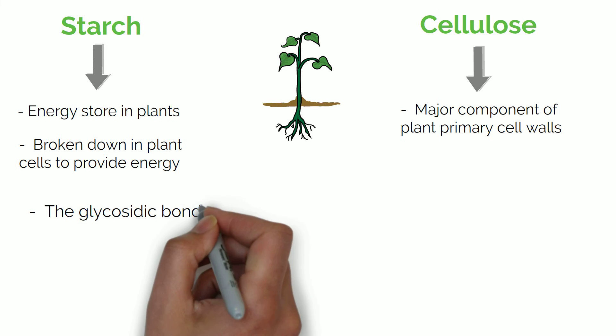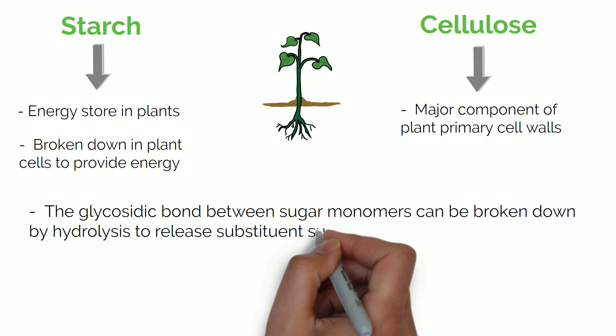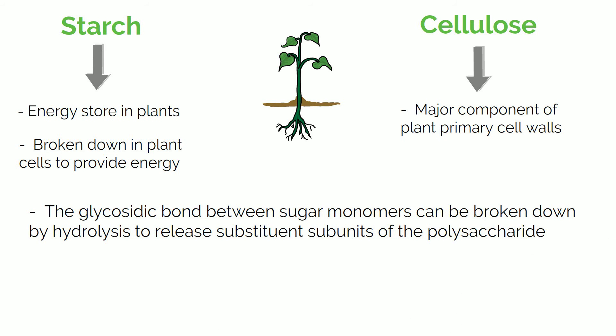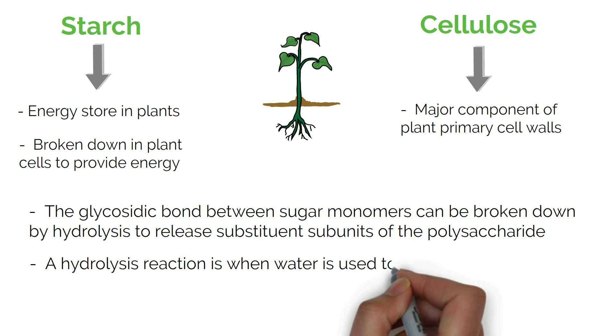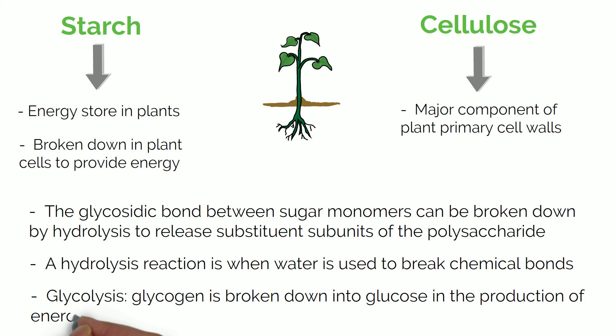The glycosidic bond between sugar monomers can be broken down by hydrolysis to release subunits of the polysaccharide. A hydrolysis reaction is when water is used to break chemical bonds. A key reaction in metabolism is called glycolysis, in which glycogen is broken down into glucose in the production of energy in the form of ATP for the cell.